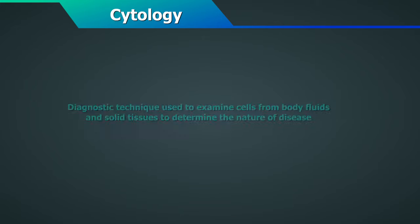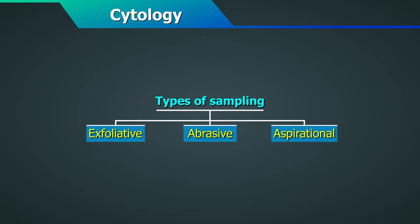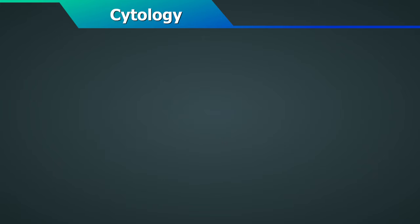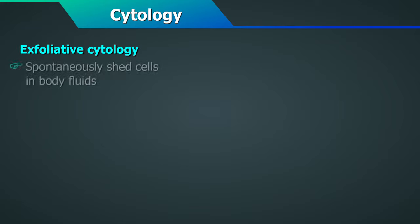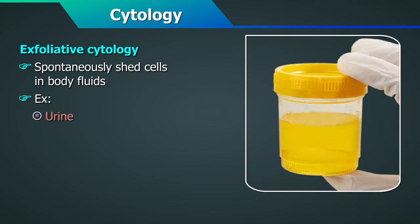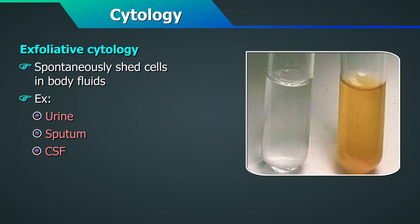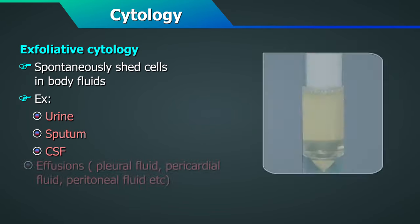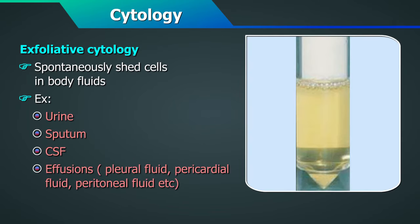It includes three types of sampling. First, exfoliative cytology involves spontaneously shed cells in body fluids, e.g. urine, sputum, CSF and effusions, such as pleural, pericardial or peritoneal effusions.